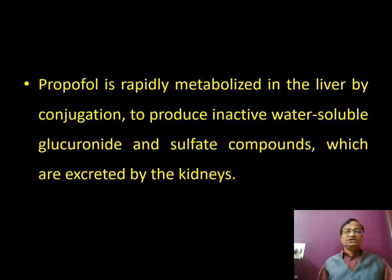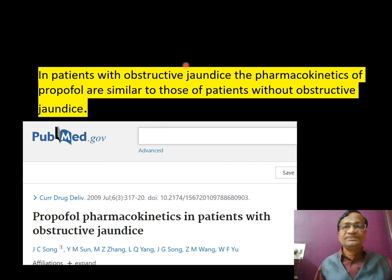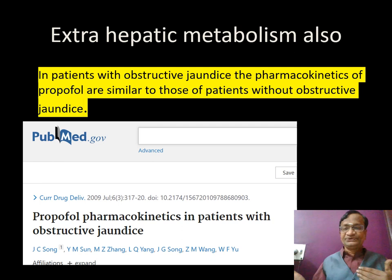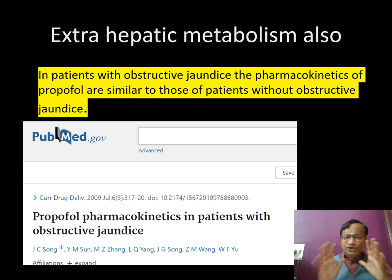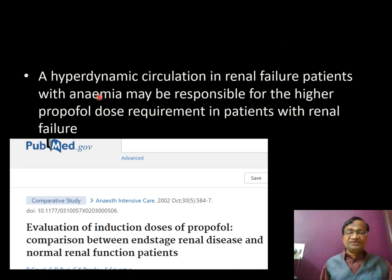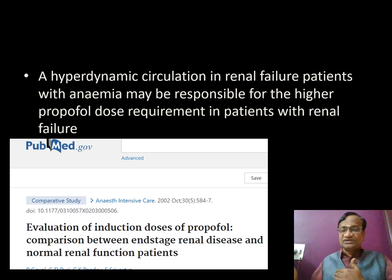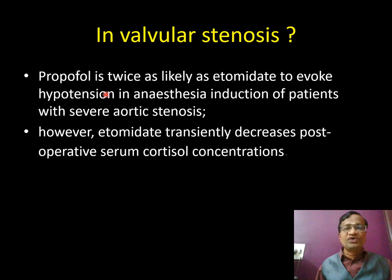Propofol is rapidly metabolized by the liver via conjugation to produce inactive water-soluble glucuronide and sulfate compounds excreted by the kidneys. Importantly, in patients with obstructive jaundice, propofol pharmacokinetics do not change significantly because extra-hepatic metabolism also occurs. In renal failure patients with anemia and hyperdynamic circulation, higher doses are needed — not because of the kidneys directly, but because anemia-driven hyperdynamic circulation requires more propofol. Propofol is twice as likely as etomidate to evoke hypotension.